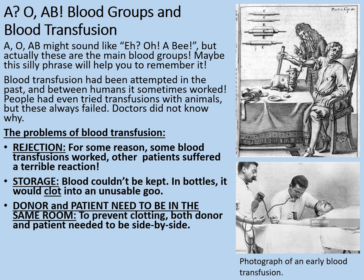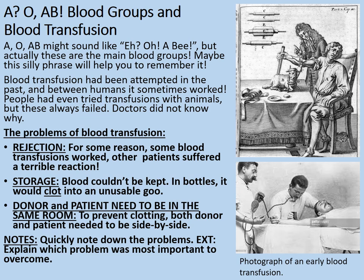That's what we can see in this picture — a photograph of an early blood transfusion between one person and another. The person on the left with the grand-looking moustache has a needle in their arm with blood coming out, and the doctor or surgeon is administering that transfusion to the patient lying down. Note down some of the problems and, as an extension, explain which problem you think was most important to overcome if blood transfusions were ever going to work.